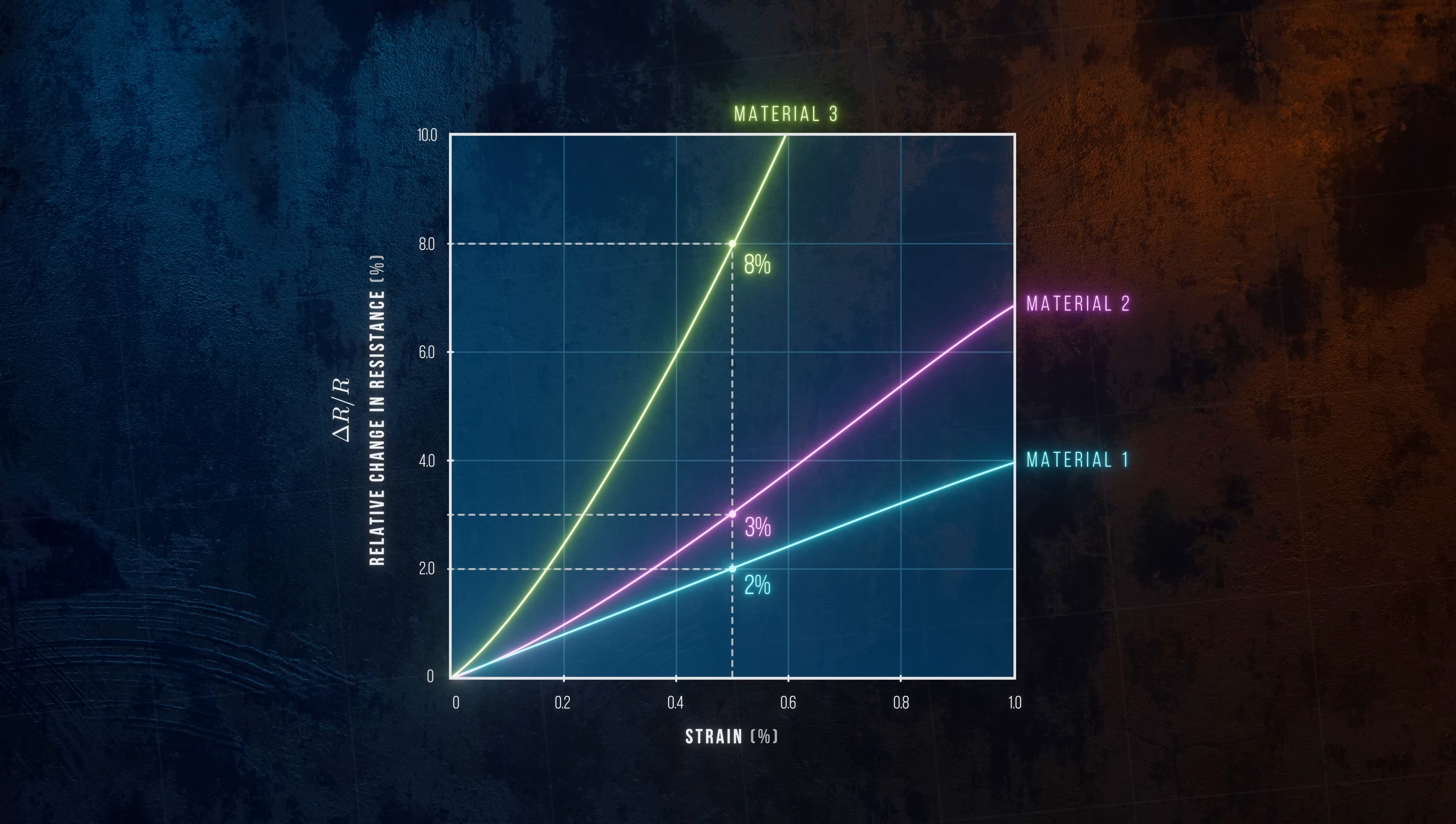A strain gauge made from material three that produces large changes in resistance for small changes in strain will be much more sensitive, and will be much better able to measure small strains.